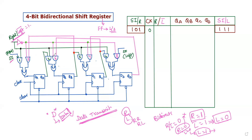For right shifting, flip-flops are connected 1, 2, 3, 4 in sequence. For left shifting, the connections are reversed. The R/L-bar input controls which AND gate set is active. We apply serial input data through the input of the AND gate. The serial input feeds into the leftmost flip-flop for right-shifting operation.